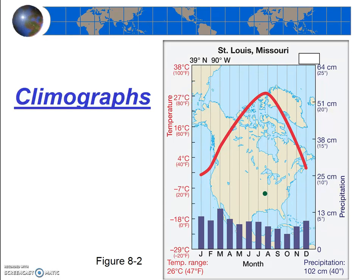As we look at more climographs, get in the habit of initially just looking to see which hemisphere you think the climate station is in. Next, would you expect this location to be a coastal station or a continental station? You can see from the map it's in the middle of the continent, but you can also tell from the temperature profile — continental locations have warmer summers and cooler winters. Since this station varies considerably from summer to winter, it's probably a continental location.